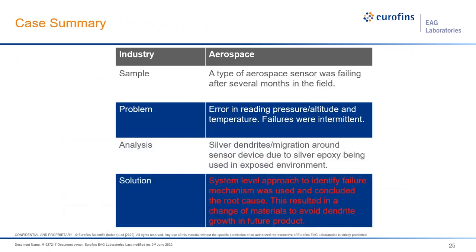To summarize this failure analysis: we had an aerospace sensor failing after a couple of months in the field, with errors in pressure, altitude, and temperature readings, and intermittent failures. When we disassembled and investigated the part, we found silver dendrites migrating around the sensor device. This was due to a silver epoxy being used in the assembly. After the failure analysis, they were able to change that material and eliminate this failure going forward.